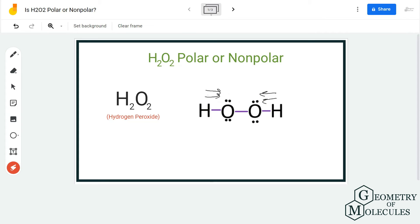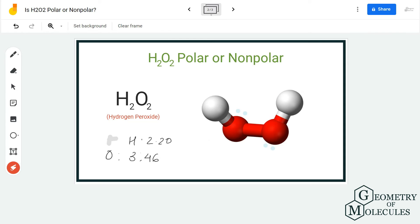Hence, there is a dipole moment in which the direction is towards oxygen atoms. Now, if this molecule were linear, the dipole moments would have cancelled out each other because of the opposite directions. As this molecule is bent, the dipole moments do not cancel out each other, and as a result there is a net dipole moment in this molecule.